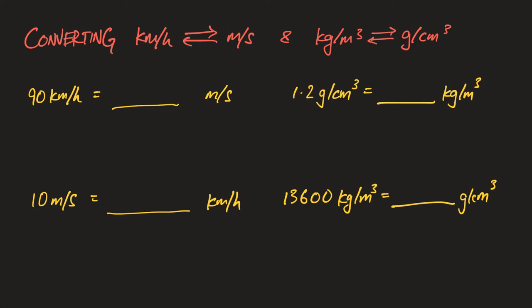In this last video we're going to look at how to do unit conversion for speed and density. When you're required to convert kilometer per hour to meter per second, there's actually a shortcut. If you can memorize it, you basically divide by 3.6.